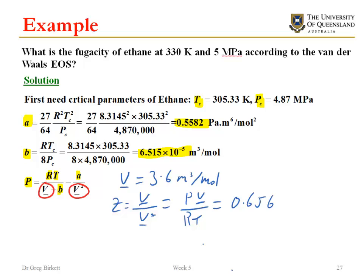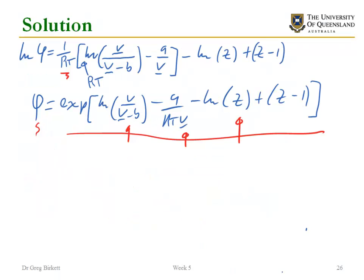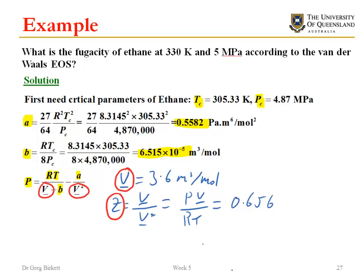Now that I know the volume and now that I know the compressibility, I can just substitute these things into this equation to calculate my fugacity coefficient. When I do all that, then the fugacity coefficient that I get is equal to 0.75. Which then in turn gives me a fugacity equal to 3.75 megapascals.